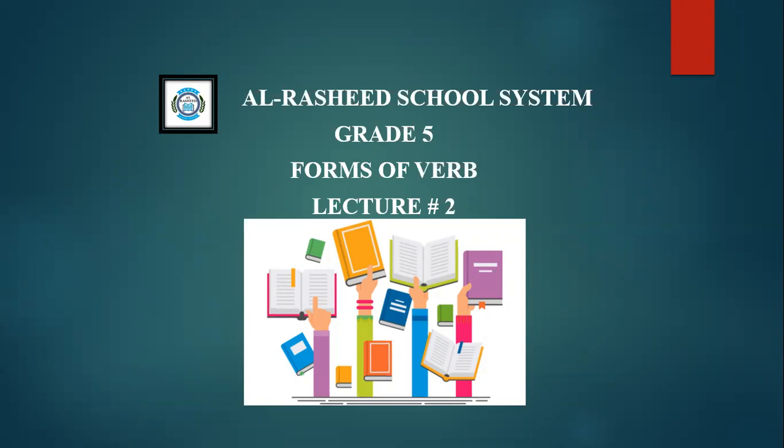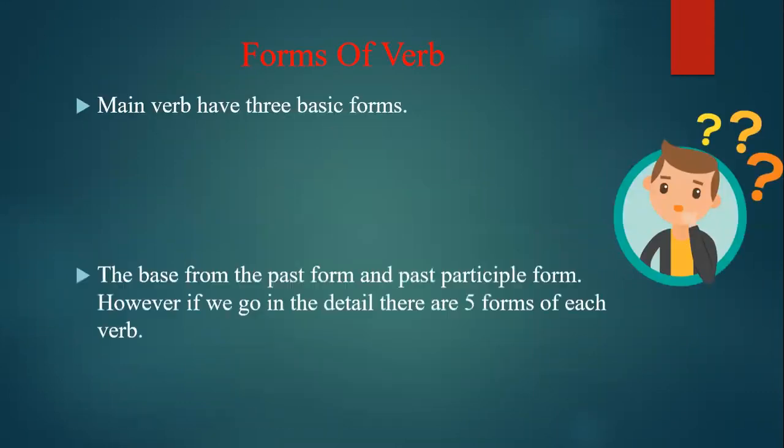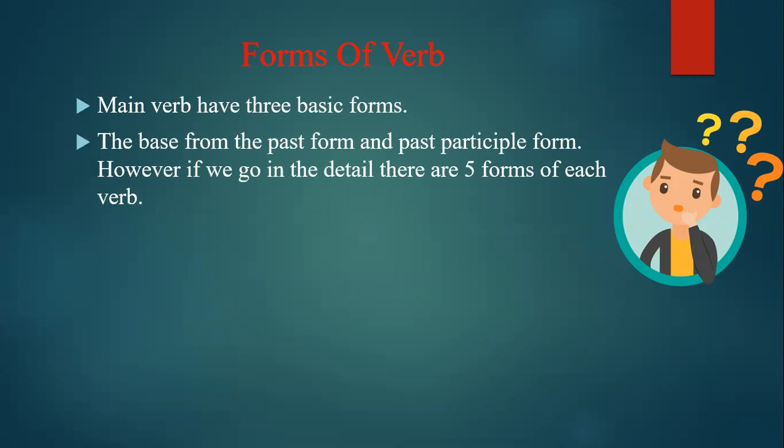Let's have a look at what the forms of verbs are. Main verbs have basically three forms: the base form, the past form, and the past participle form. However, if we go in detail, there are five forms of each verb.